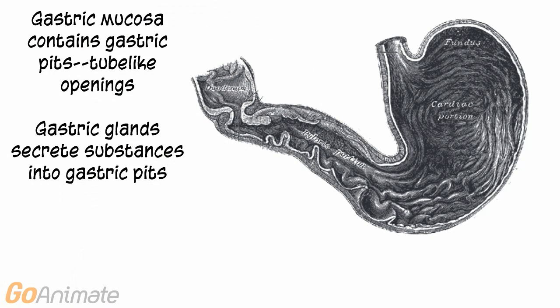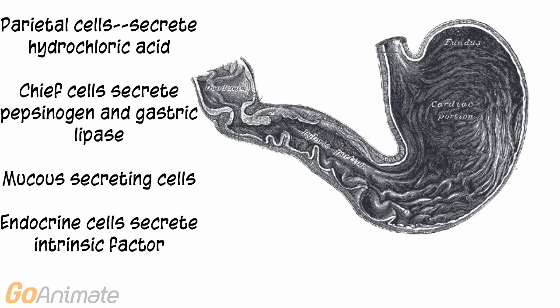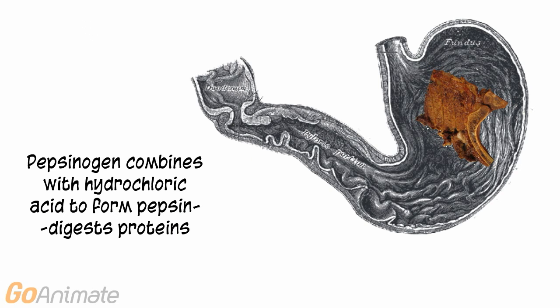The inner lining of the stomach, the gastric mucosa, contains gastric pits or tube-like openings. Gastric glands secrete substances into gastric pits. The cells of the stomach include the parietal cells, which secrete hydrochloric acid. Chief cells secrete pepsinogen and gastric lipase. Mucus-secreting cells secrete an alkaline mucus, and endocrine cells secrete intrinsic factor, which helps with vitamin B12 absorption. Pepsinogen combines with hydrochloric acid to produce pepsin, which digests proteins.